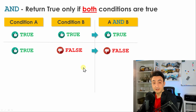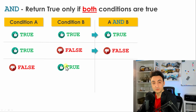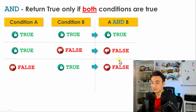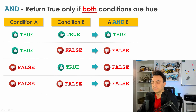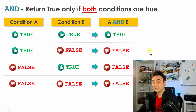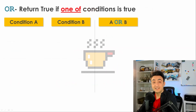The other way around: condition A is false and condition B is true — not both are true, so the result is false. And the last scenario where both are false, the result is also false. So the AND operator is really strict — both conditions must be true to get true, otherwise it's always false.